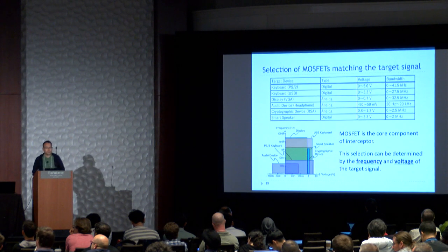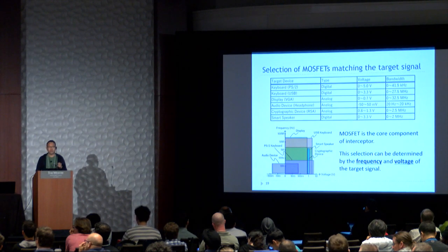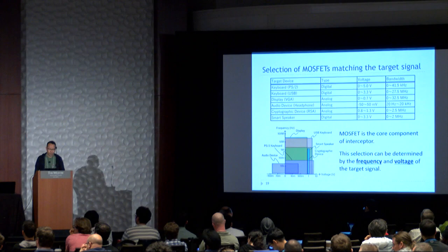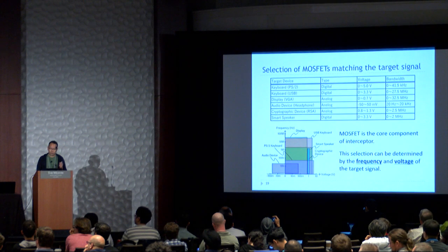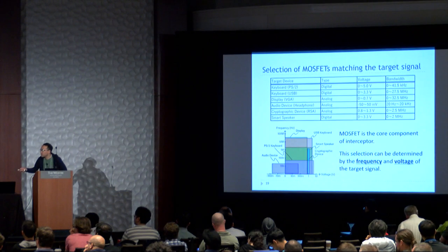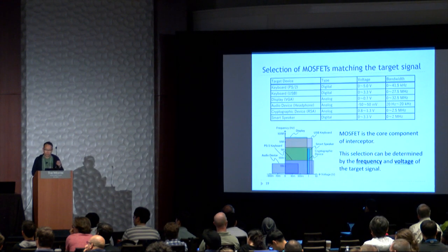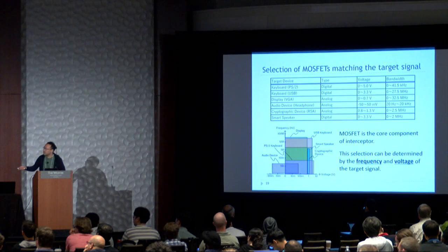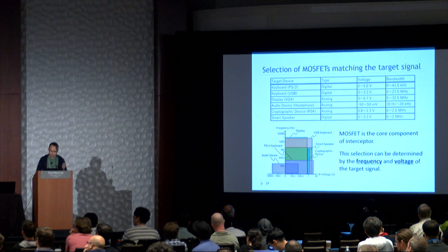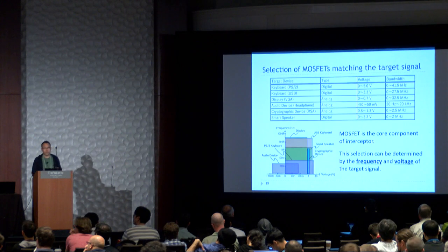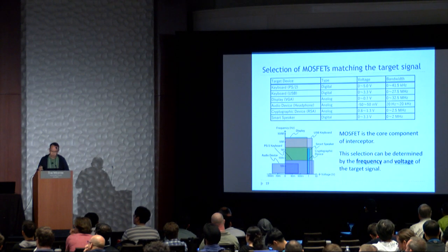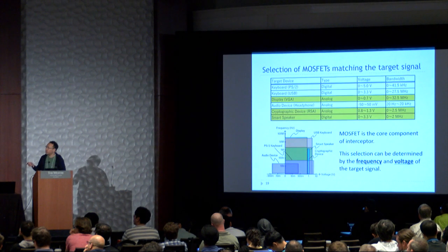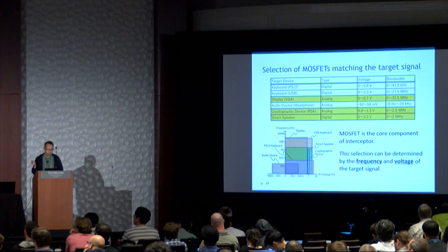I will explain how to select the MOSFET, the core component of the interceptor. This selection is determined by the frequency and voltage of the target signal. Six devices are shown here, and other devices can be attacked by proper MOSFET selection. We will explain in detail the leakage of highlighted devices. If you are interested in other devices, please check our paper.